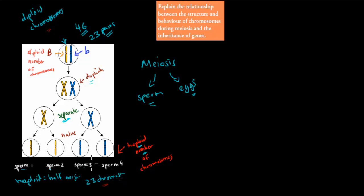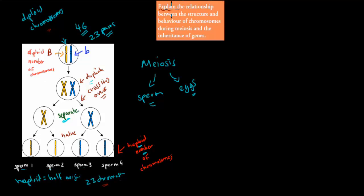Something important that also happens here is called crossing over. It happens in metaphase 1, and crossing over means that the actual alleles on the chromosomes will be a bit different because of that crossing over. The dot point itself says: explain the relationship between the structure and behavior of chromosomes during meiosis and the inheritance of genes. So we're going to talk about the structure and behavior of chromosomes — how they separate, how only half is received from the original, and how crossing over relates to inheritance.